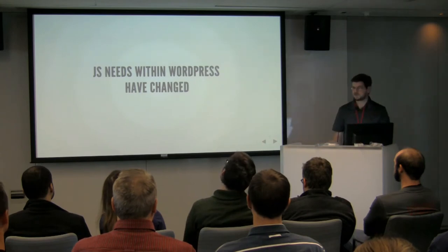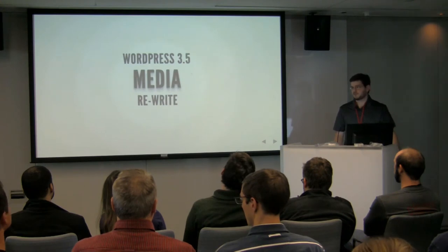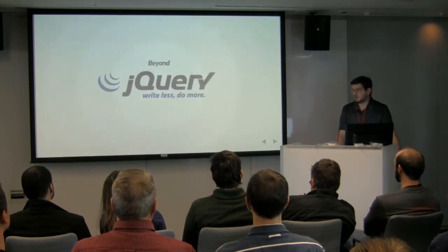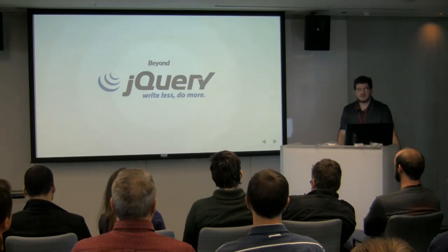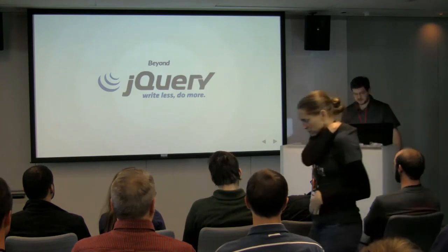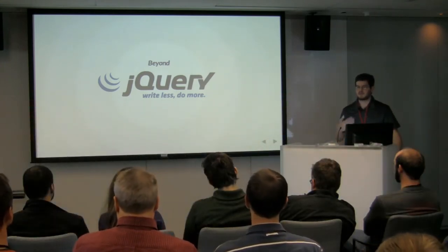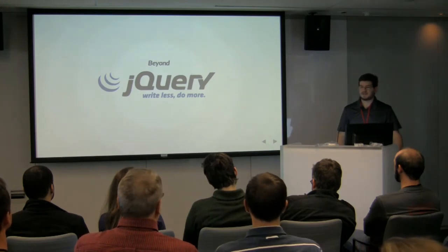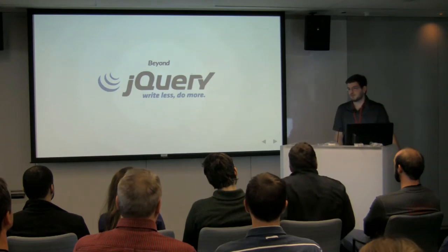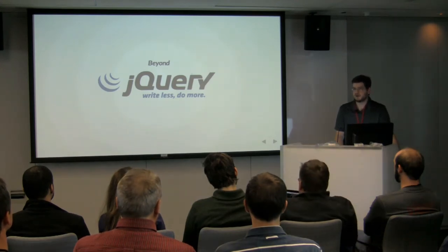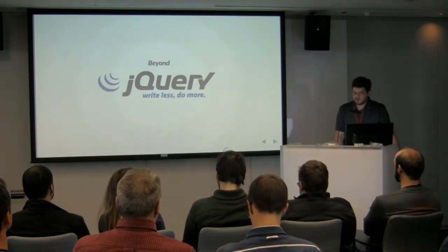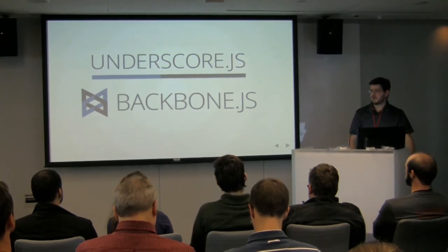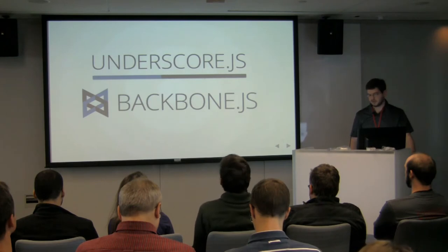As the JavaScript needs within WordPress have changed, the JavaScript in WordPress has risen to meet the challenge. In 3.5, for the media rewrite, we needed to move beyond jQuery. It is a very powerful tool that is extremely good for handling user interaction, events within the browser, and fetching data from remote servers via Ajax. But it did not provide enough structure out of the box to build something as complex as the media manager without getting really messy. So two particular libraries were added to WordPress: Underscore.js and Backbone.js.